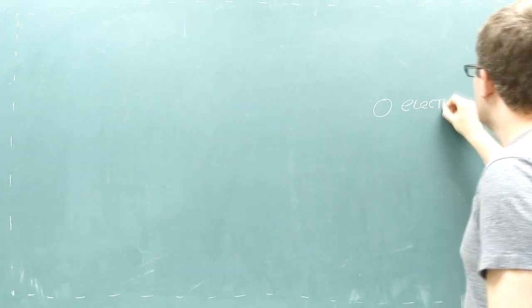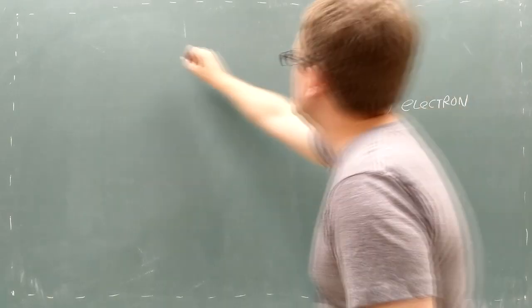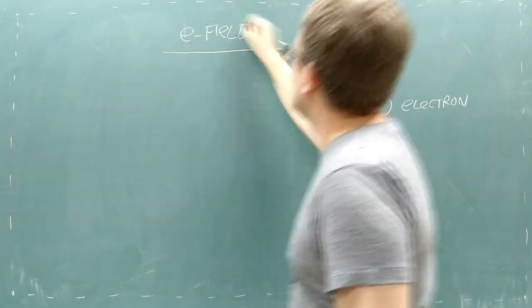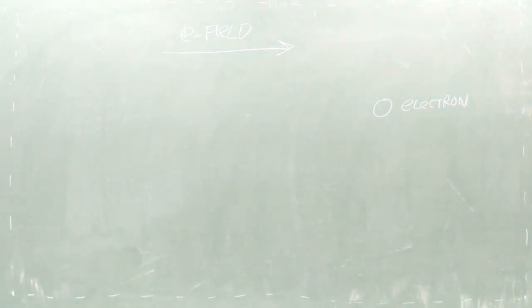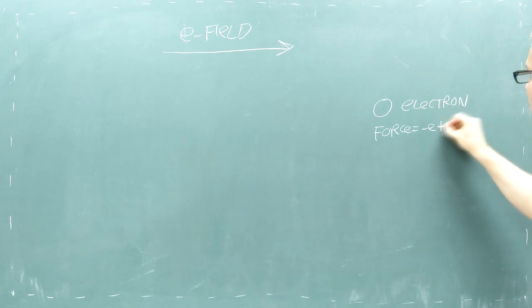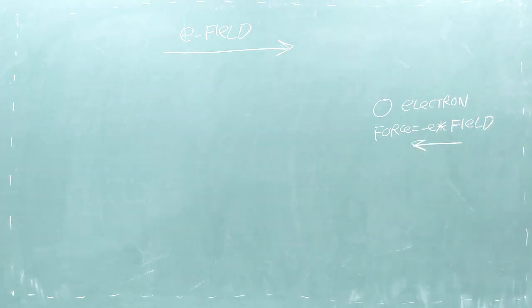When an electron is placed in an electric field, it will accelerate under a force given by the electron's charge times the electric field. Since the electron's charge is negative, this force points opposite of the field.